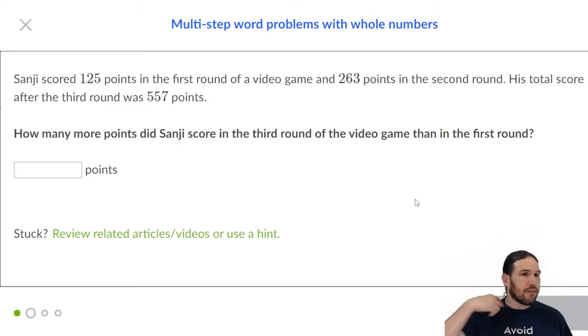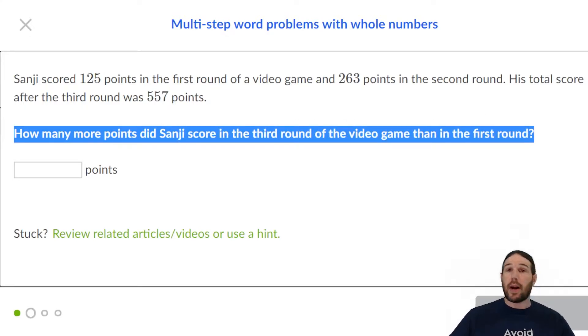Sanji scored 125 points on the first round of the video game and 263 points in the second round. His total score after the third round was 557. How many more points did he score in the third round than in the first round? Again, this is a very trickily worded question, and that is on purpose because it's important to know what question it is that you're answering.